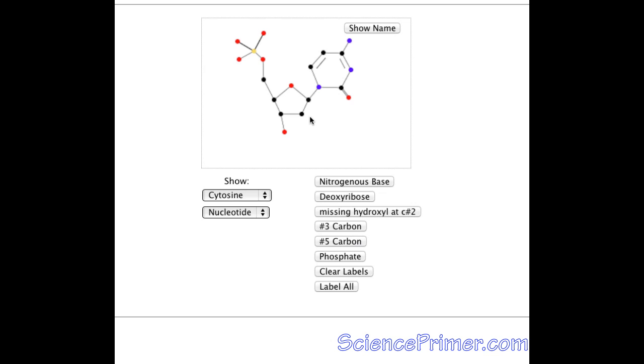The button on the top left toggles on and off the name of the nucleotide shown. The upper select menu below the main window allows you to view any one of the four nucleotides in DNA: adenine, guanine, cytosine, or thymine. Notice that they all have the same general structure, but have different nitrogenous bases attached to the number one carbon.